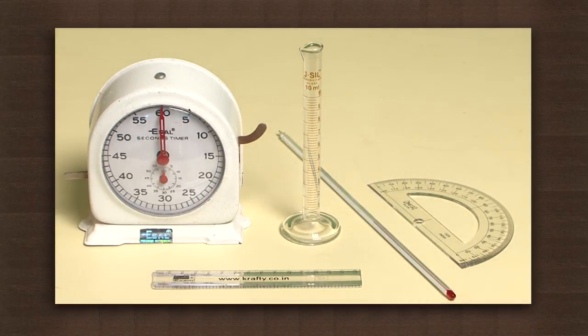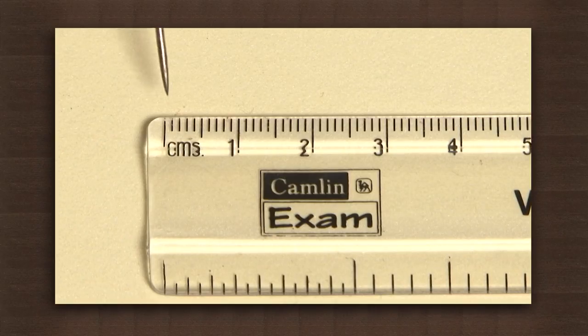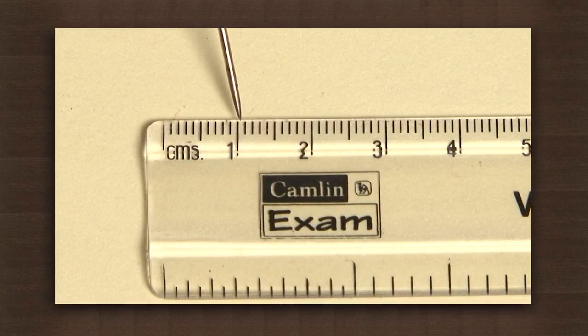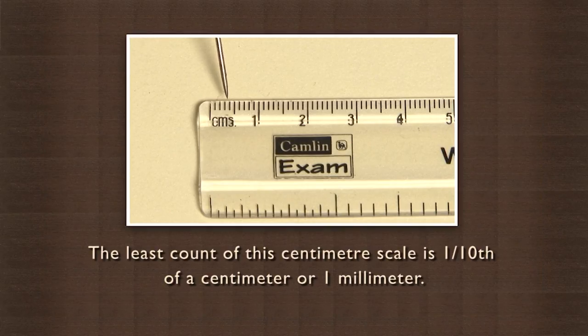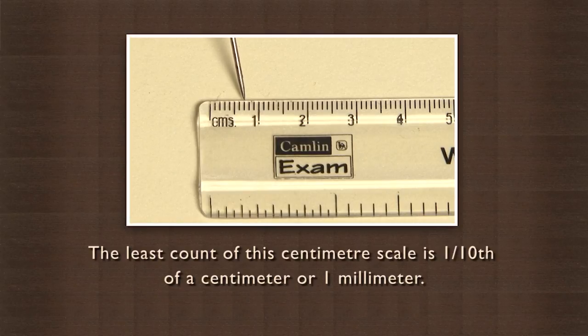Here we have a centimeter scale. The part from here to here is one centimeter, and the fine lines divide the centimeter into ten equal parts. Hence the least count of the centimeter scale is one-tenth of a centimeter or one millimeter.